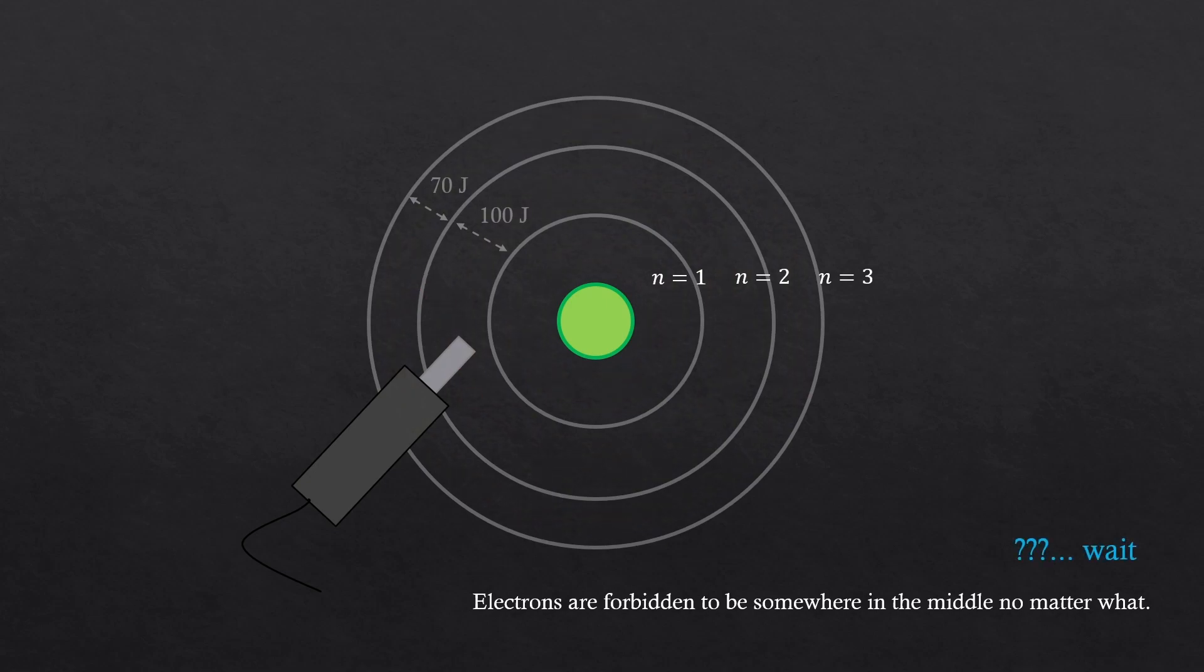But wait, what if when they're traveling to reach the next orbit, say the electron is making a transition now, and we could be like, stop there. Isn't the electron in between the orbits at that moment at least? You said the electrons are forbidden to exist in there no matter what.